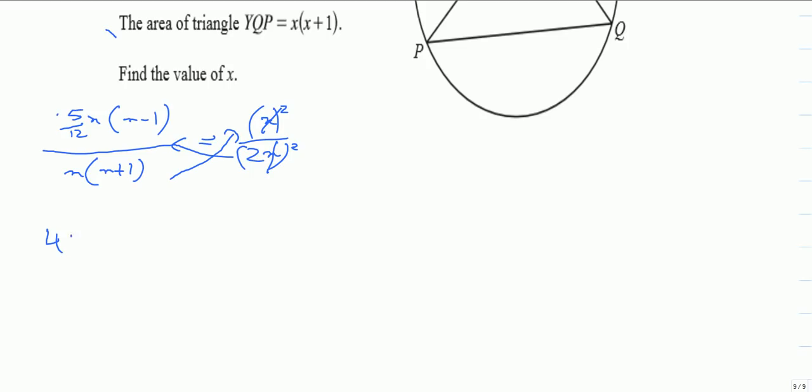So I will have 4 - 2 squared will be 4. So it will be 4 × 5/12 × x(x - 1) equals x + 1.